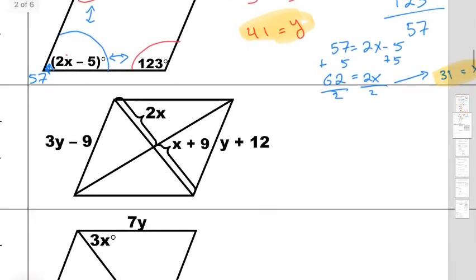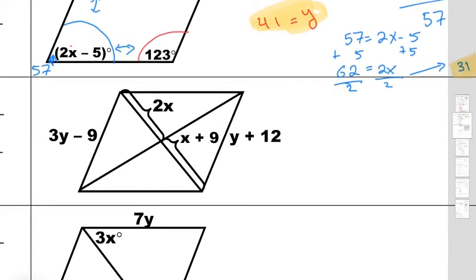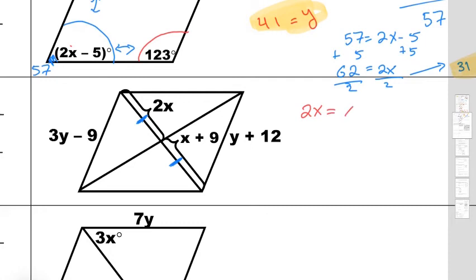Next question. Once again, what properties need to happen in order for it to make a parallelogram? The properties of a parallelogram say that the diagonals are going to bisect each other. So we set 2x equal to x plus 9 and solve for x. I subtract x from both sides — on the right side they cancel, and on the left side 2x minus 1x gives me just x. So x equals 9.